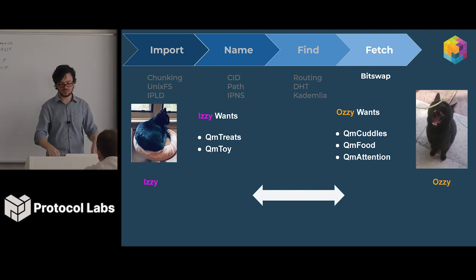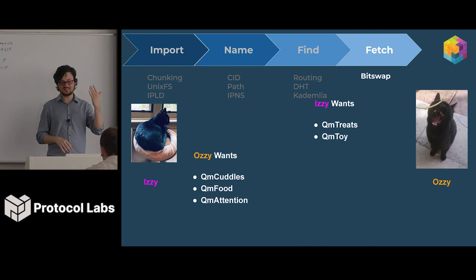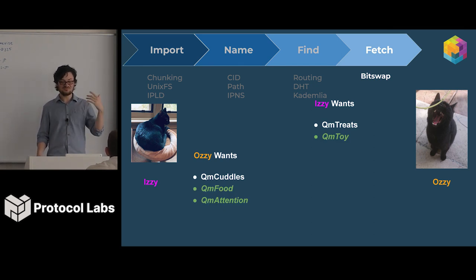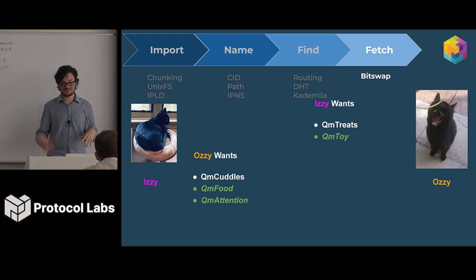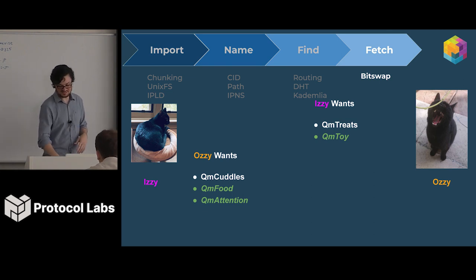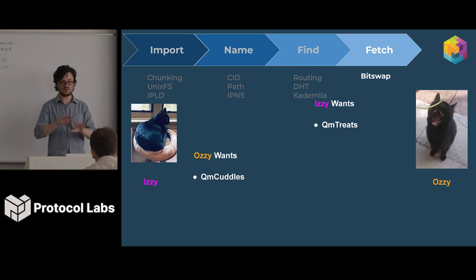They've swapped their want lists. Now Izzy determines what she has, and Ozzy determines what he has. Izzy realizes she has blood and food — food she's trying to eat that Ozzy is now stealing. Ozzy has purr. Then they send these pieces of files to each other and cross these off their want lists.